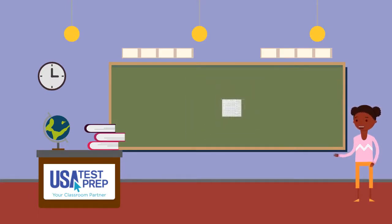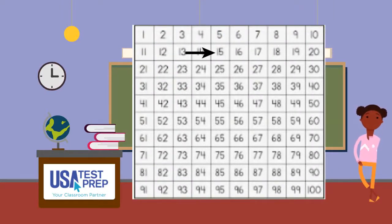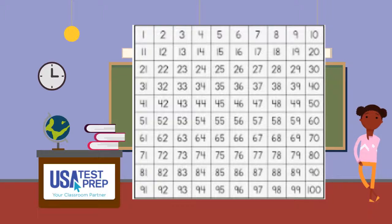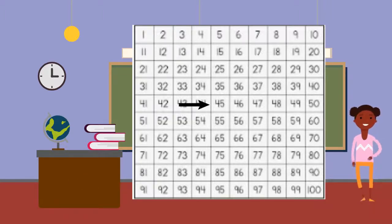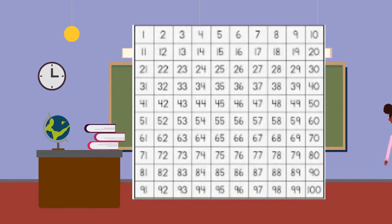On a 100 chart, I know that if I pick a number, the number directly below is 10 more. If I start with number 35, what is 10 more than 35? That's right, 10 more than 35 is 45. Let's go to the construction site to use more mental math.